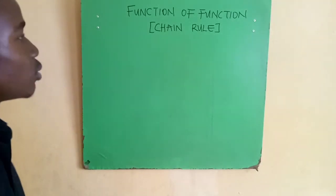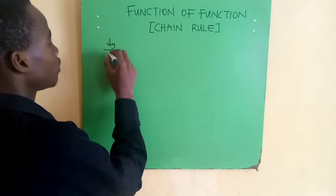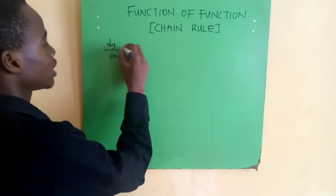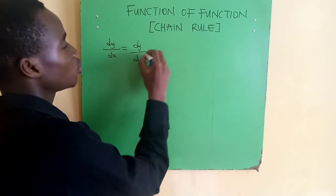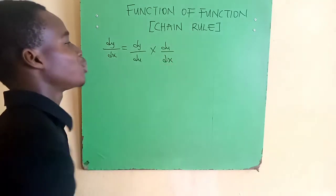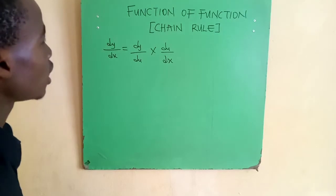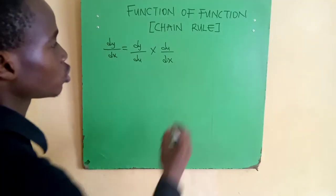The formula for the derivative of a function of function is dy/dx = dy/du times du/dx. I'm sure many will ask where this u comes from, so I'll show you. For example, if we have a function y = 4(3x-2)^5...